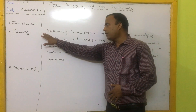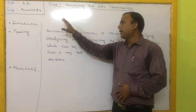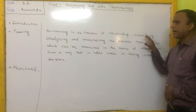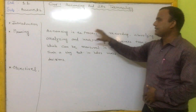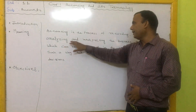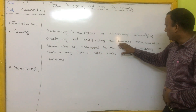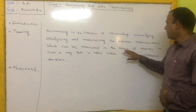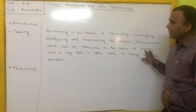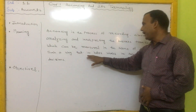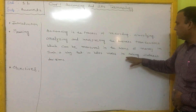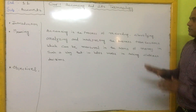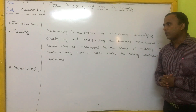Now, the meaning of accounting: Accounting is the process of recording, classifying, analyzing, and interpreting business transactions which can be measured in terms of money, in such a way that it helps the user in taking a correct decision. That is the definition of accounting.